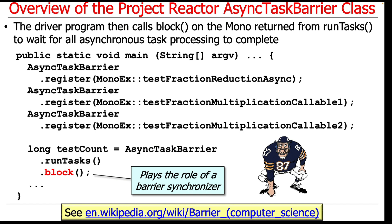The main thread of control will block until all the other background computations have finished. In essence, the Async Task Barrier and its use here with a blocking call plays the role of a barrier synchronizer, which is a common synchronization technique.